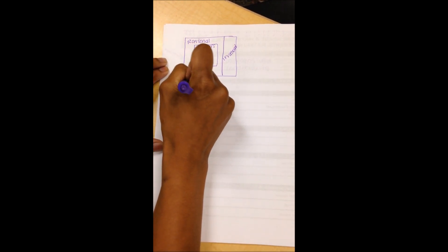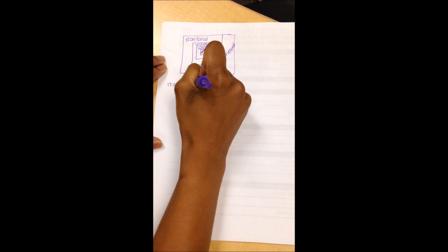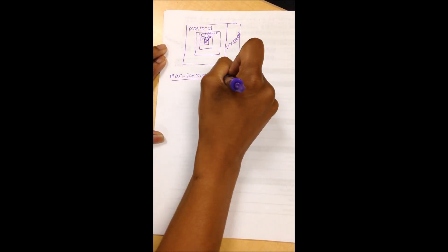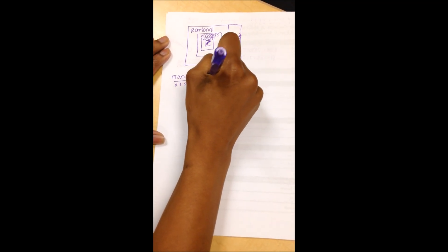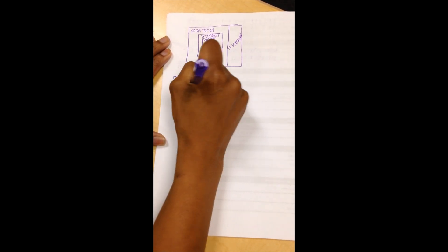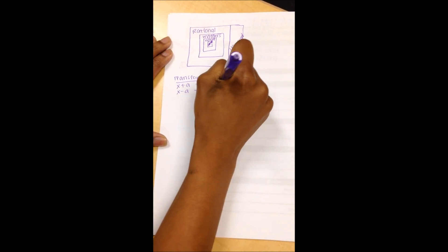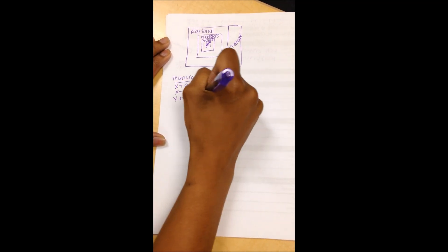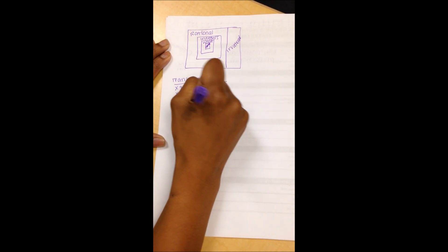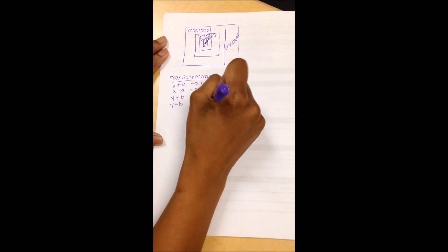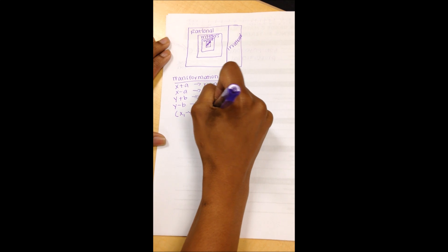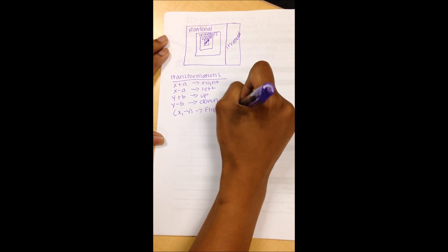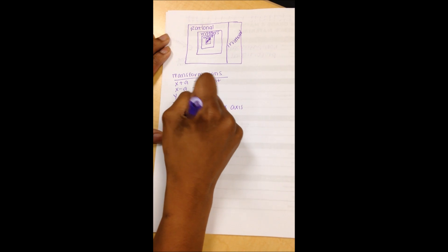For your transformations, we've been learning those by memory for quite some time now. You got x plus a is right, x minus a is left, y plus b is up, y minus b is down. If I flip over the x-axis, that's x, negative y. If I flip over the y-axis, it's negative x, y.